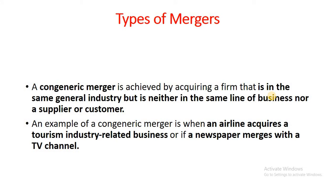Then, Congeneric Merger. A congeneric merger is achieved by acquiring a firm that is in the same general industry, but the firm is not in the same line of business nor a supplier or customer.